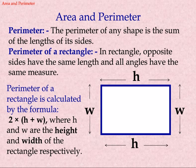Perimeter of rectangle. In a rectangle, opposite sides have the same length and all angles have the same measure. The perimeter of a rectangle is calculated by the formula 2 into h plus w, where h and w are the height and width of the rectangle respectively.